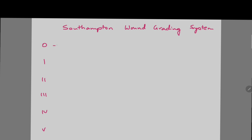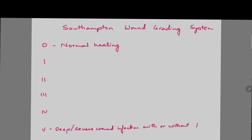Let's take a look at the first one, that is 0. Grade 0 is Normal Healing in Appearance. And Grade 5 is Deep or Severe Wound Infection with or without Tissue Breakdown or Hematoma that requires Aspiration.